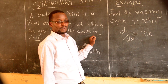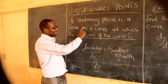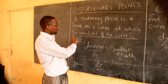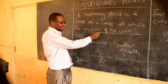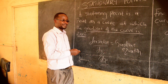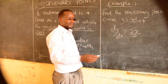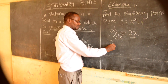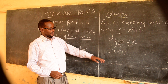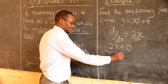We have said from the definition of a stationary point that a stationary point is a point on a curve at which the gradient of that curve is zero. So if the gradient is zero, and this is the equation that is giving us the gradient, then we equate this equation to zero. When we do that we will get the value of x as zero.